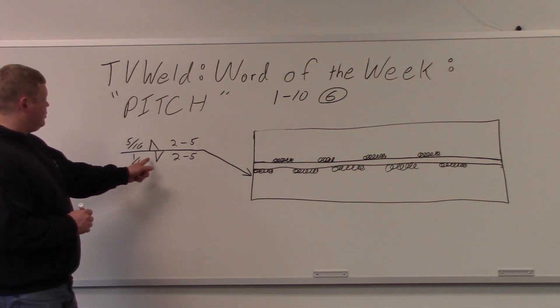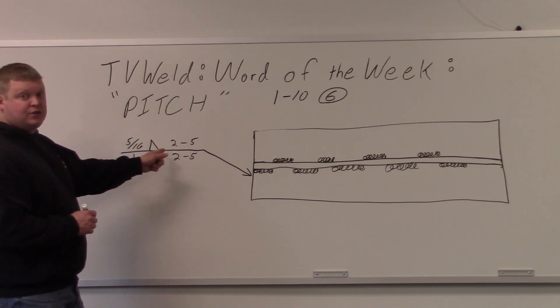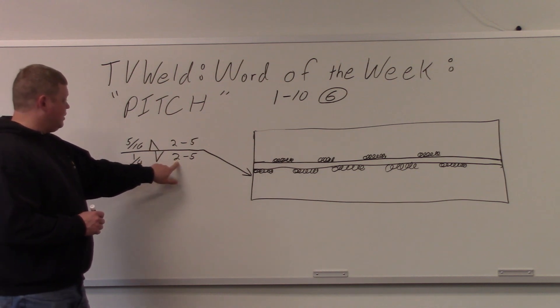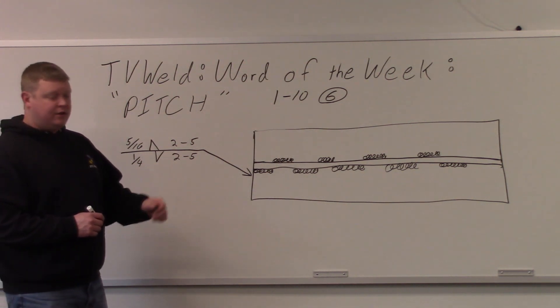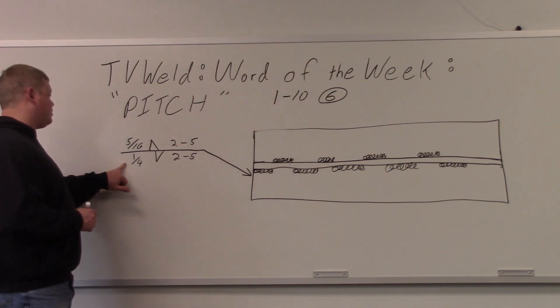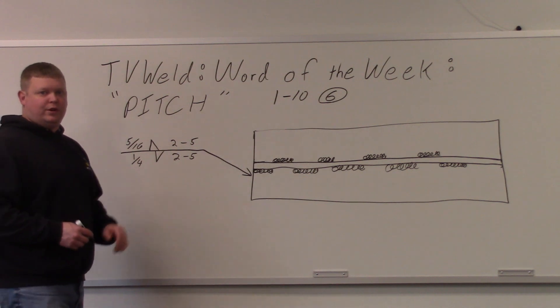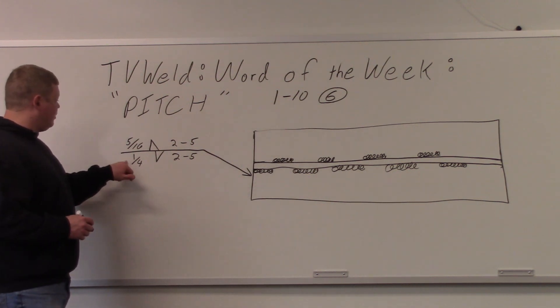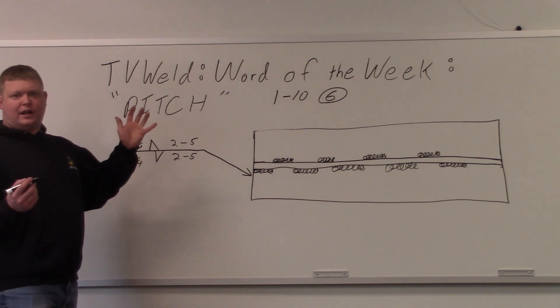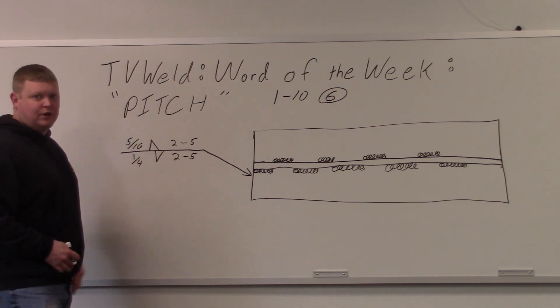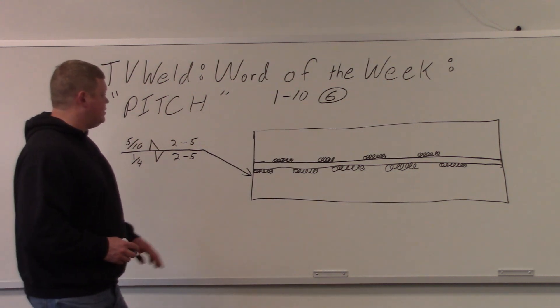To make it intermittent, you just take your fillet weld symbol and you offset them a little bit like that. That means it's a staggered intermittent fillet weld. 2-inch length, 5-inch pitch. We'll leave that the same on the top and the bottom or arrow side and other side. Then over here, just to improve your welding symbol reading abilities, 1/4-inch leg side on the arrow side. The other side, 5/16ths. Why you would ever change that, I don't know. We're just doing it to show you some welding symbol data, I guess.